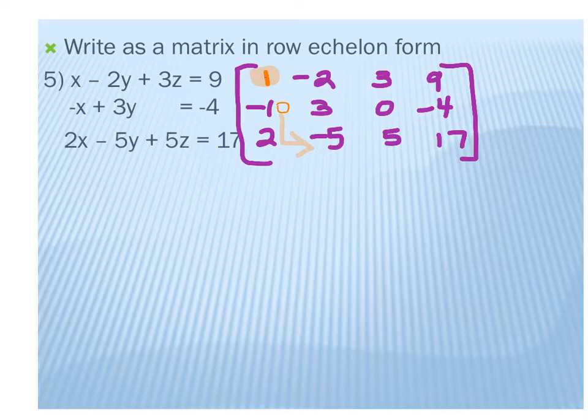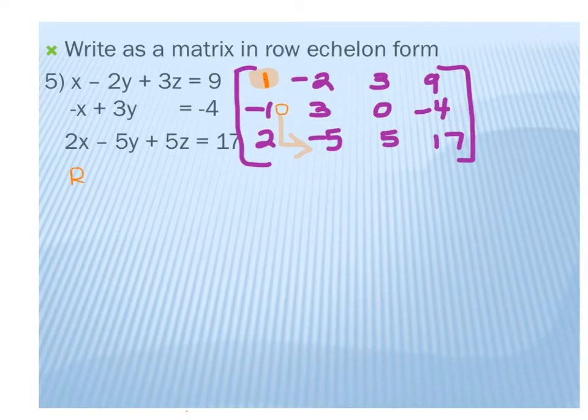I would never try for a 1 before getting a 0, except for the first one — all the 0s first. Because you could try to get a 1 there, but then you have to work backwards, and you'll lose the 1 and have to get it back again. You can't ever change a 0 once it's a 0. So how would I get a 0 where the negative 1 is? Row 1 plus row 2.